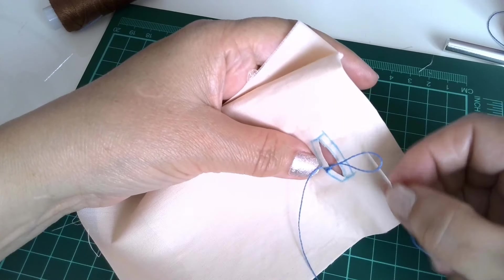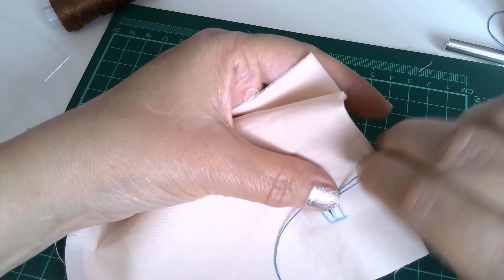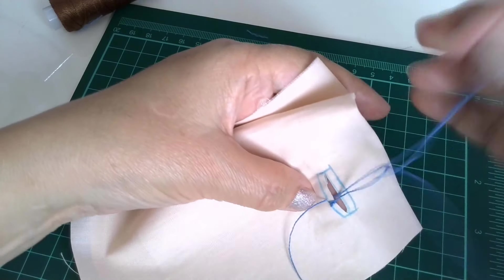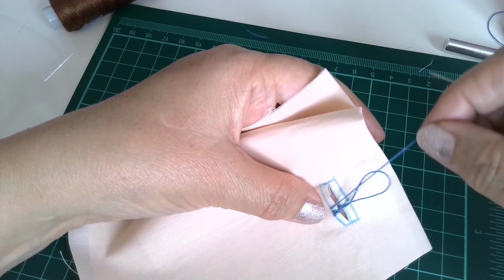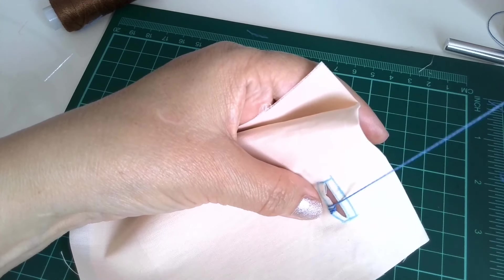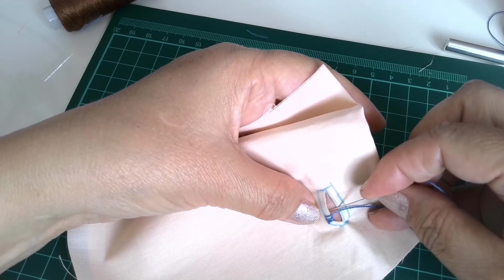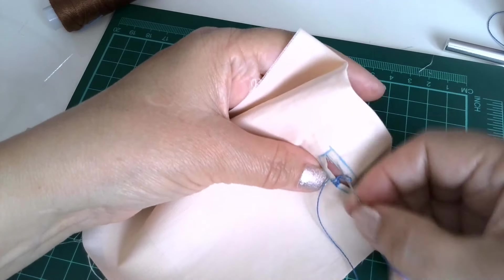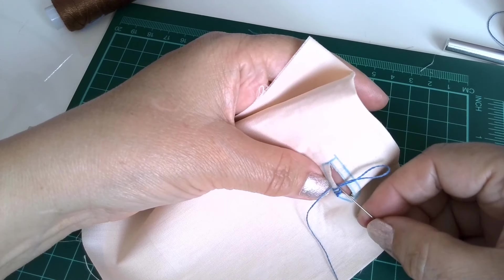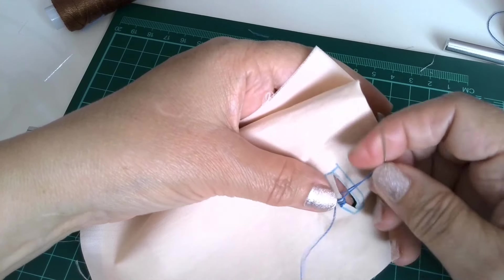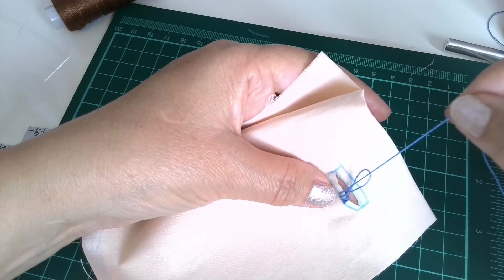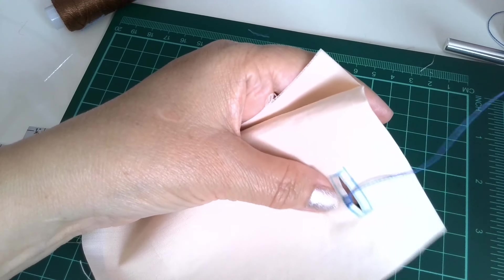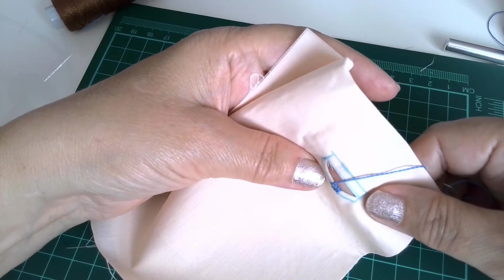Again, loop. See? The loop. And we go from down up. Making a knot. Okay. Again, loop. We go from down up. And here is the knot at the edge of the buttonhole.